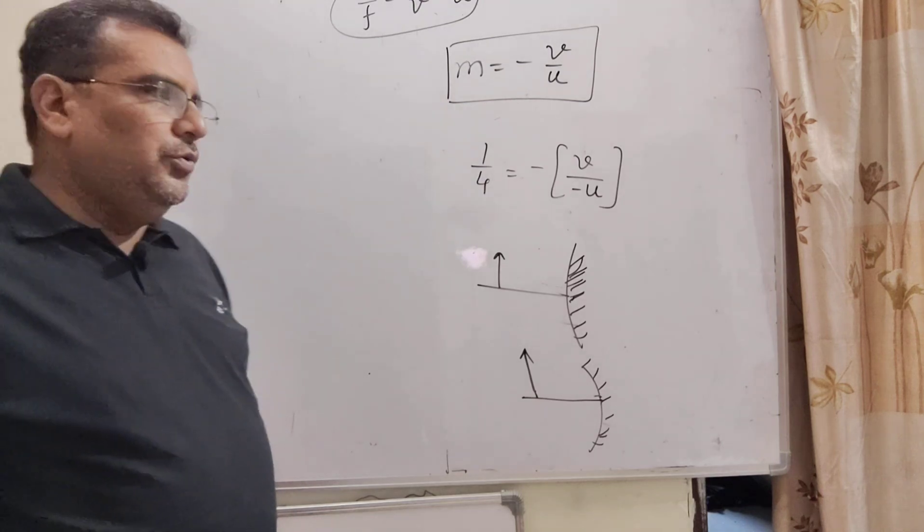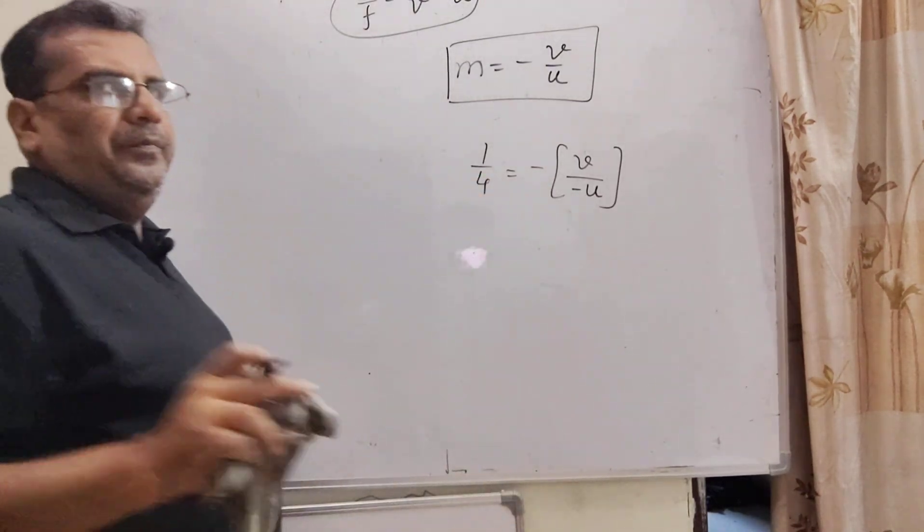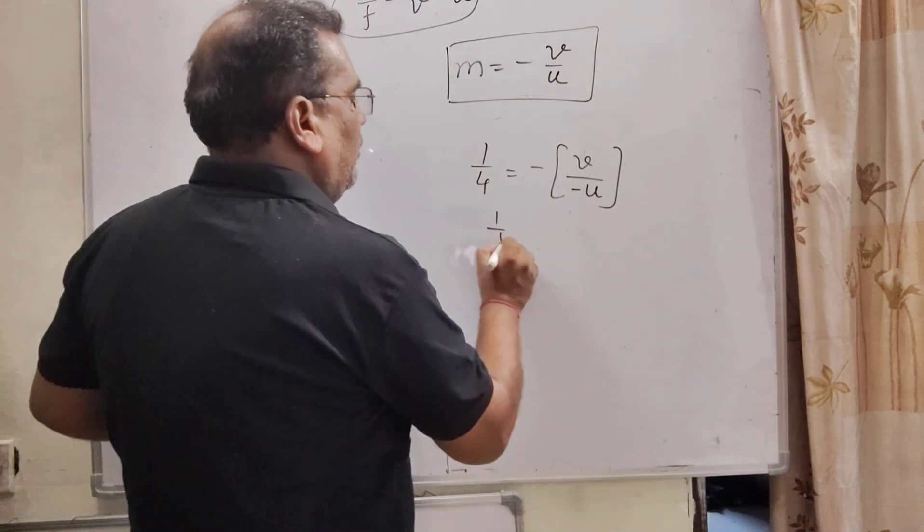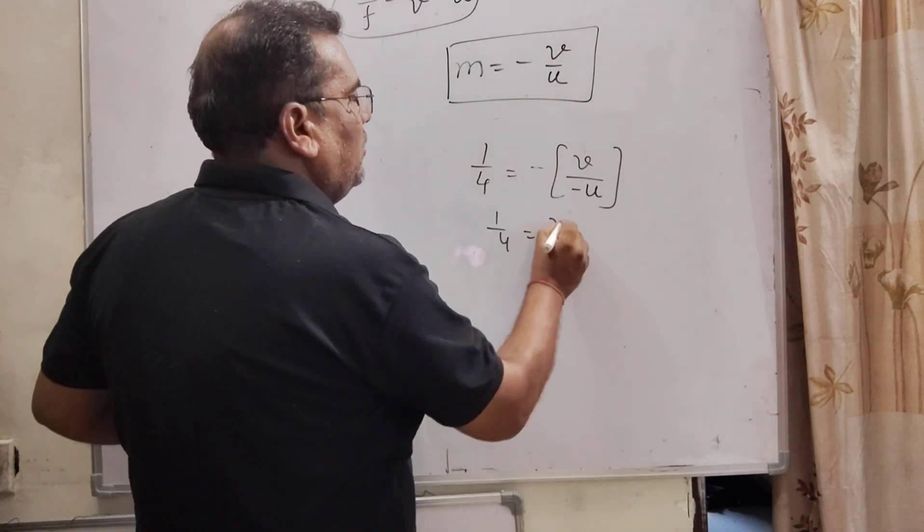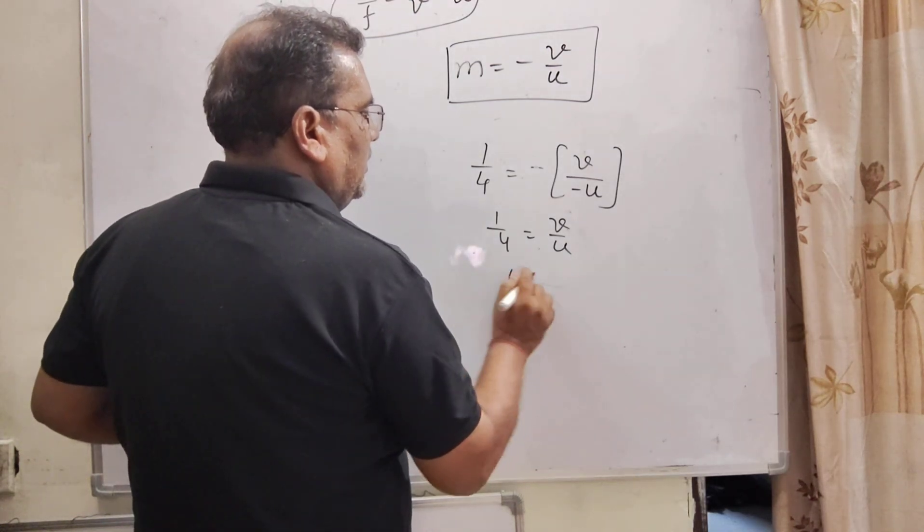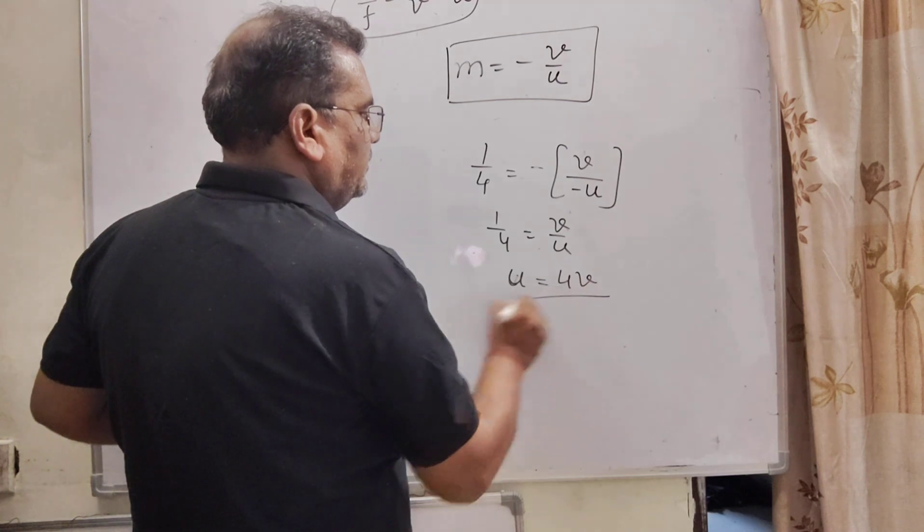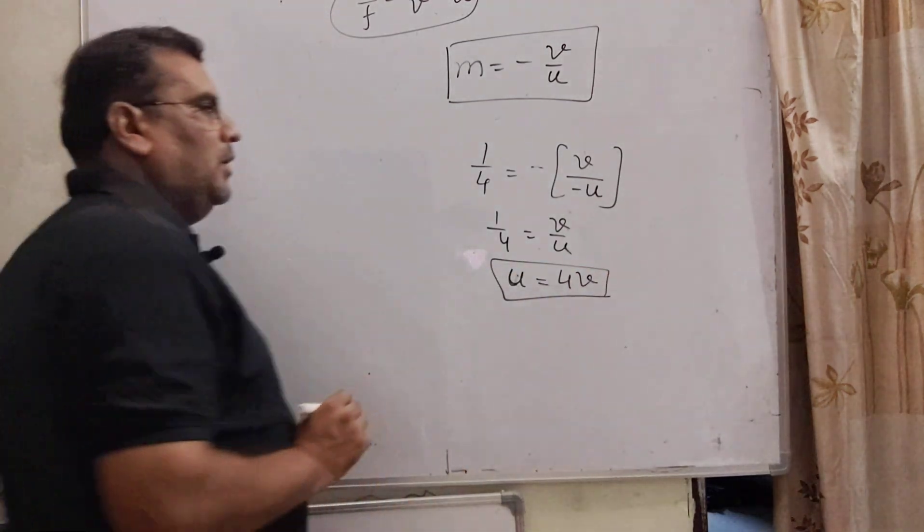Therefore, we have put here negative U. So 1 by 4, minus minus cancel out, V by U. Then U is equal to 4V.